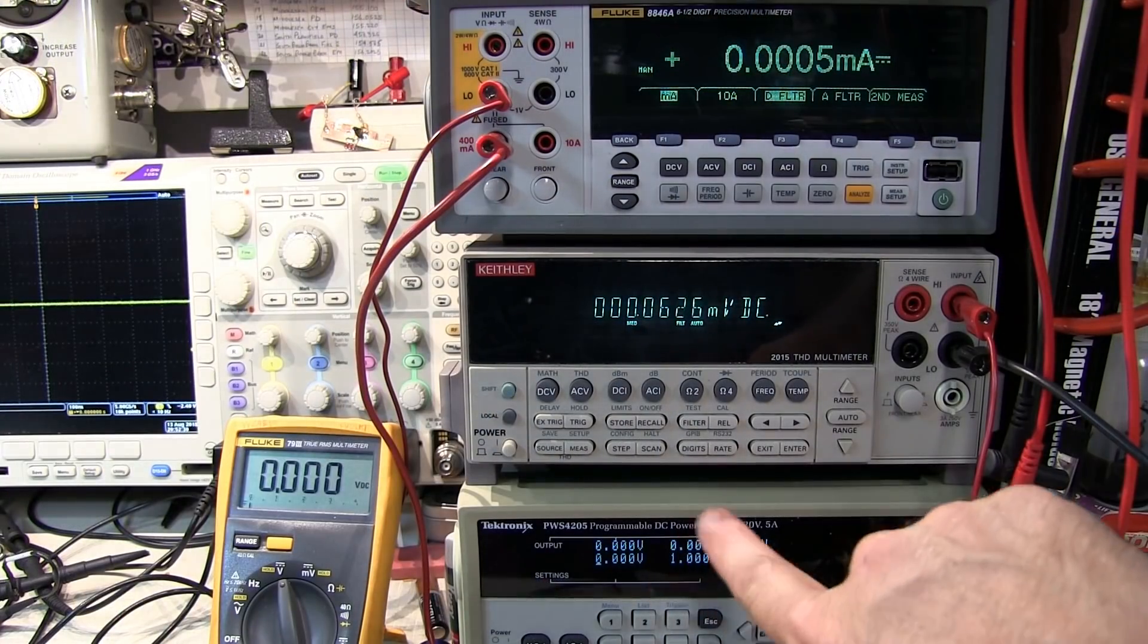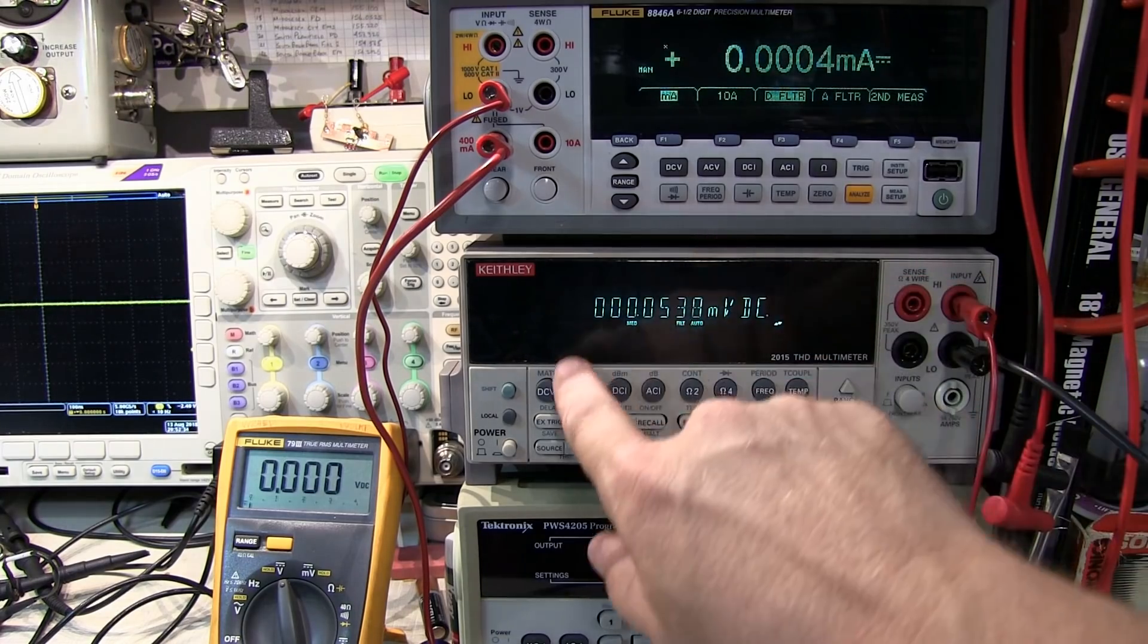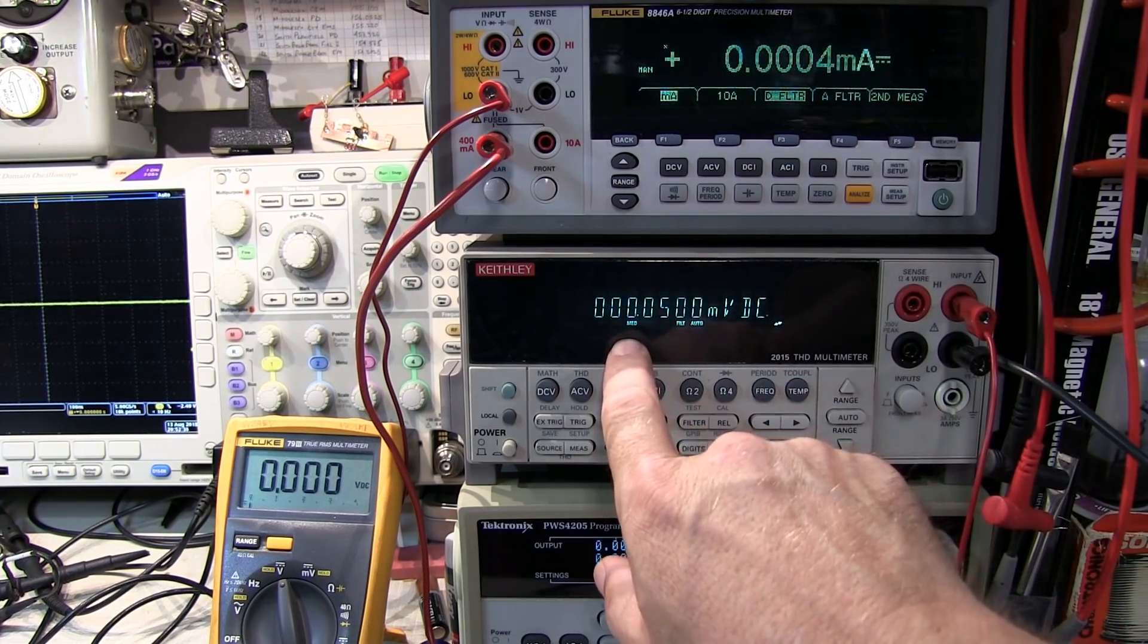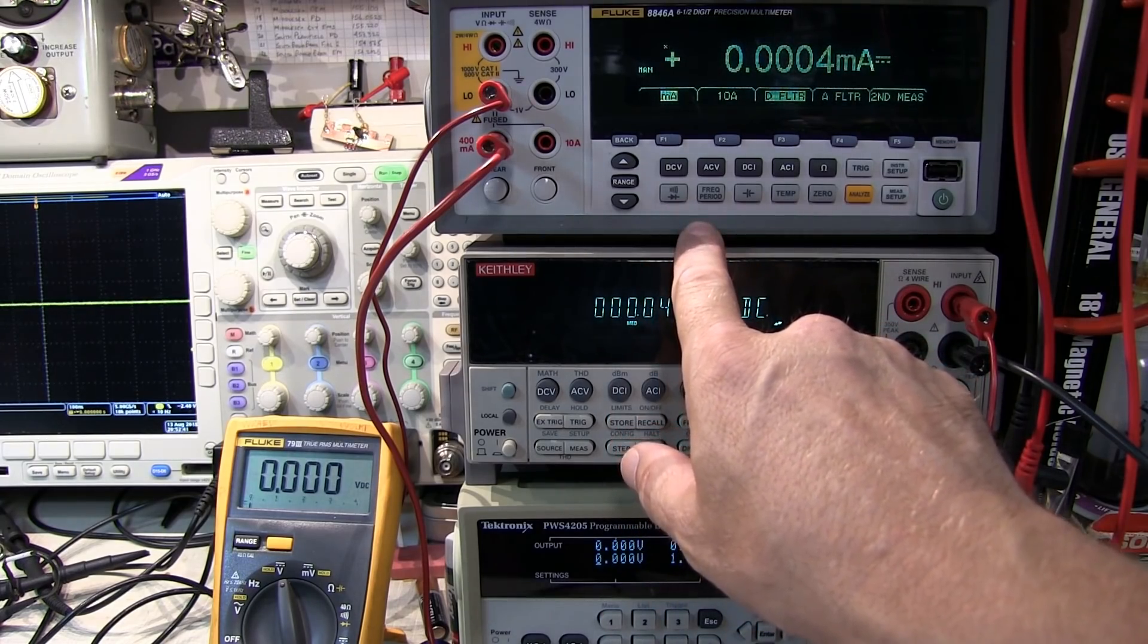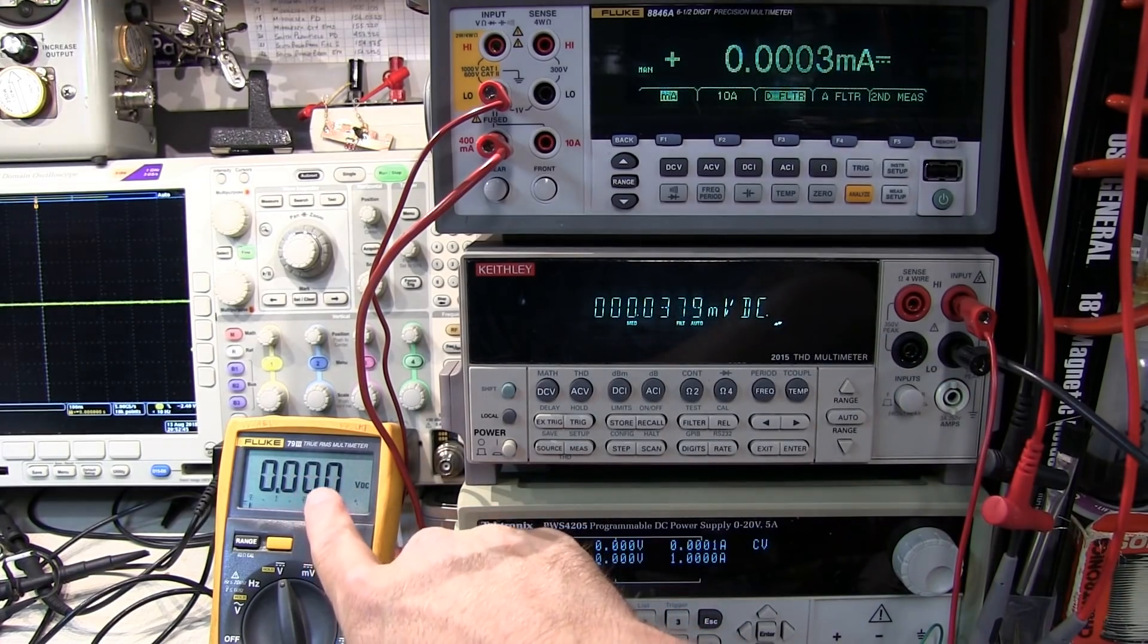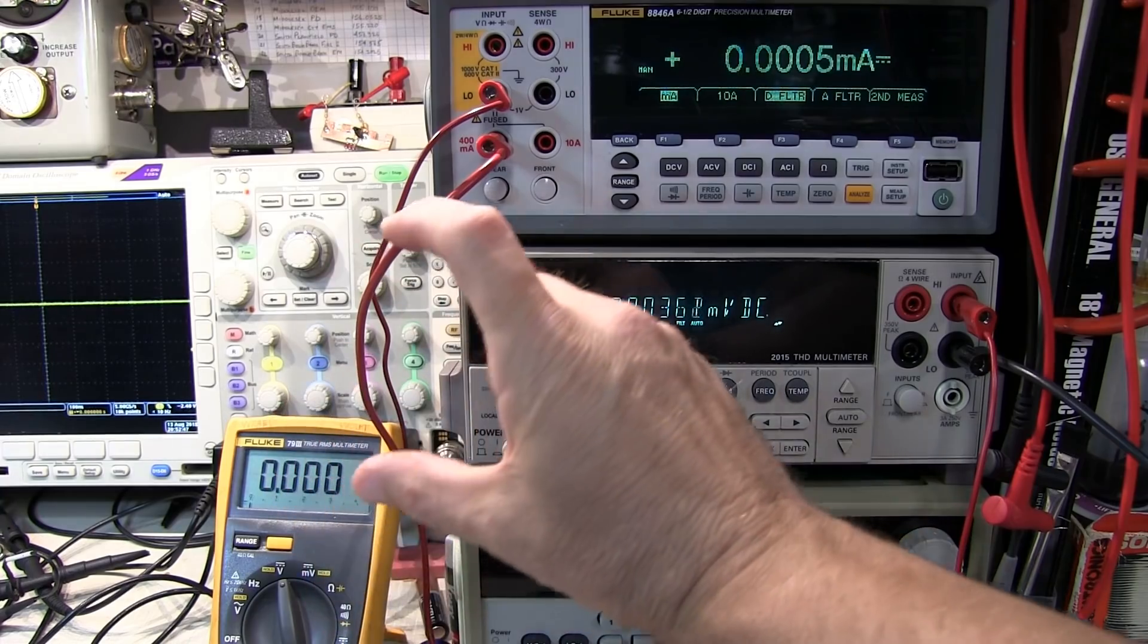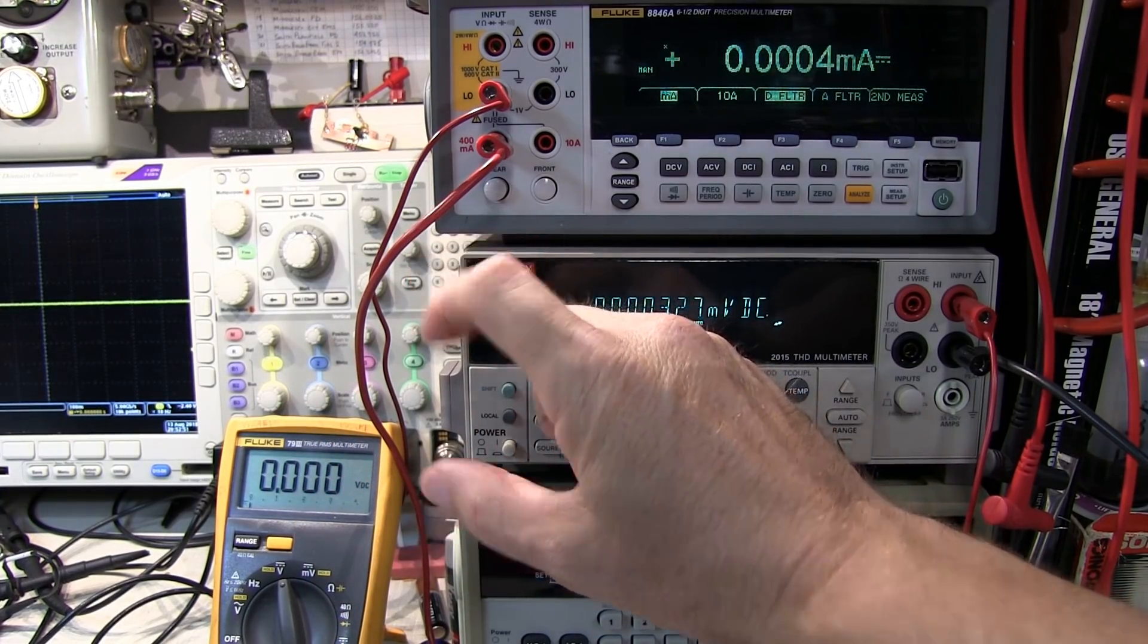Here's the instrumentation. This is my variable DC power supply. The voltage on the Keithley multimeter here measures the voltage across the Zener diode itself. This measures the current going through the Zener diode. The voltmeter down here measures the total voltage appearing across the series combination of the 330 ohm resistor and the Zener diode.